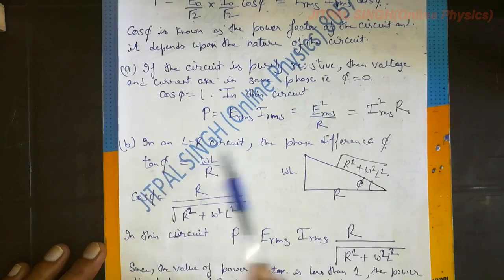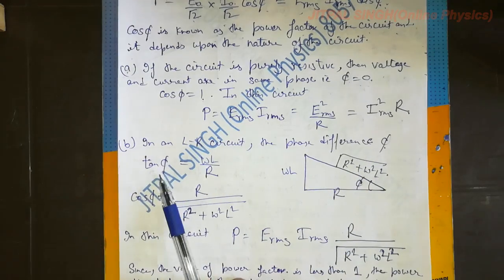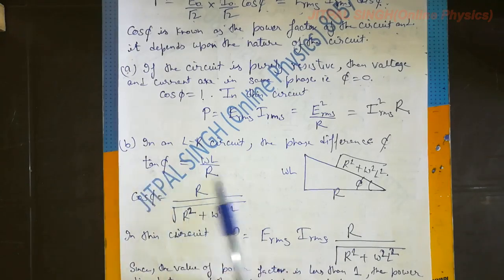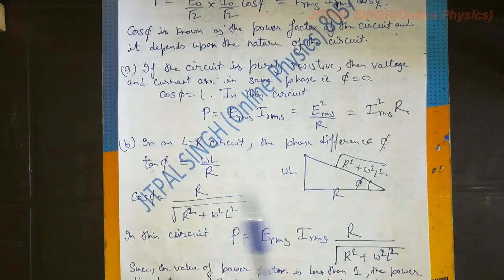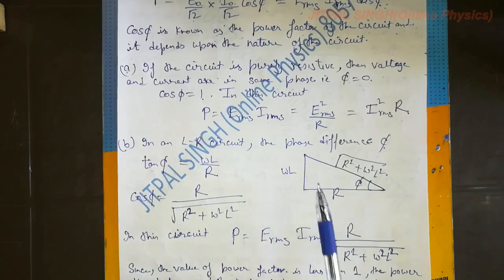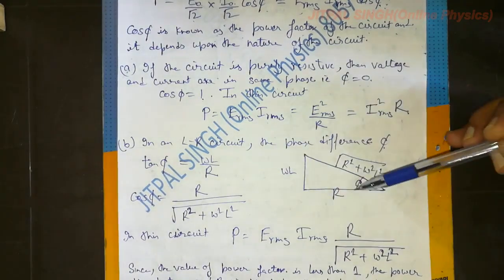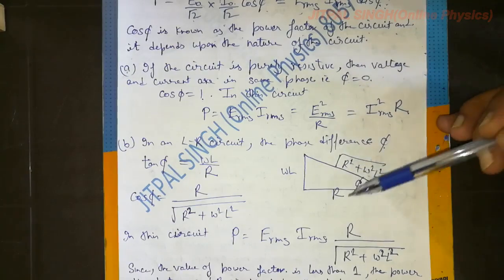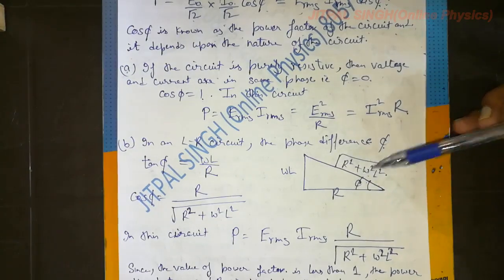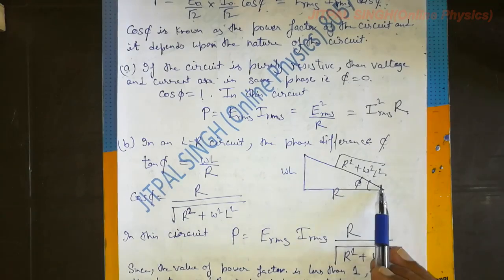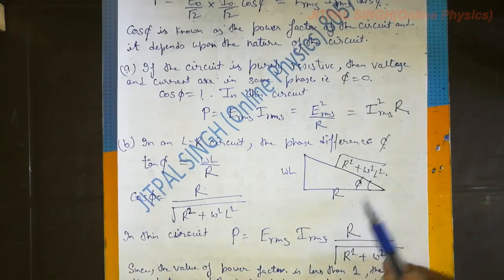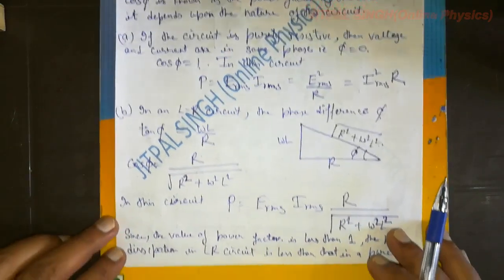In an LR circuit, the phase difference φ satisfies tan φ = ωL/R. Using the impedance triangle — perpendicular ωL, base R, angle φ — the hypotenuse is √(R² + ω²L²). Therefore cos φ, the power factor of the LR circuit, is R/√(R² + ω²L²). This is why the impedance triangle plays an important role in AC circuits.